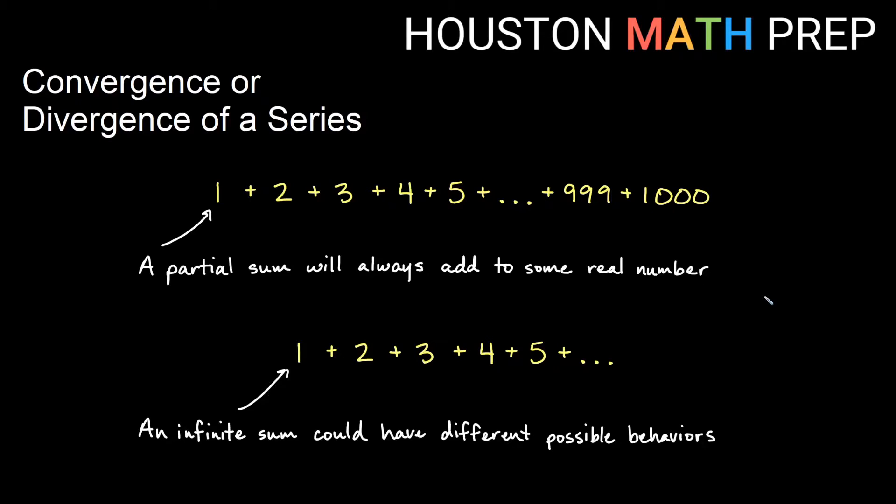Hey everyone, Houston Math Prep here. When we are summing up a list of terms, we can sum up a couple of different lists of terms. We can sum up a partial sum. In other words, we have a list of things we're adding up and we stop at some point. So that partial sum is always going to add to some number.